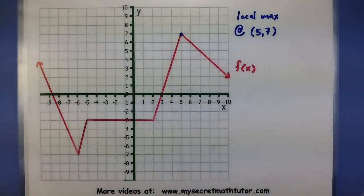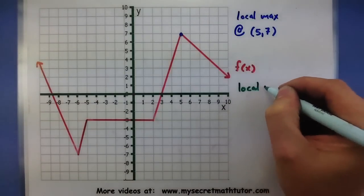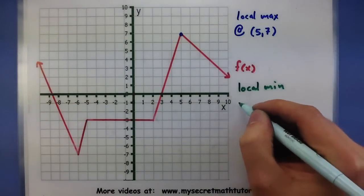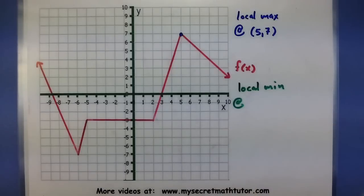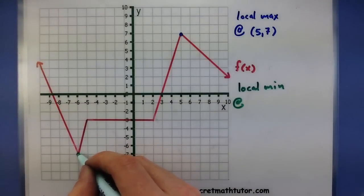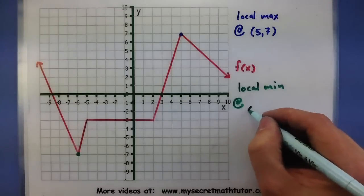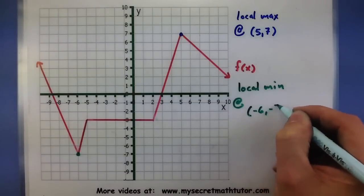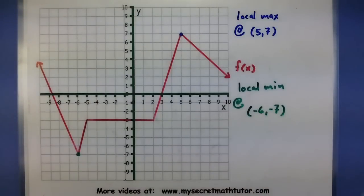Let's go ahead and grab our local minimums. So it looks like I have a nice interval down here and a local minimum at (-6, -7).